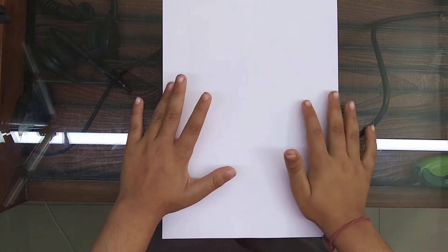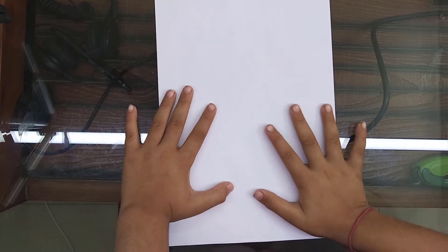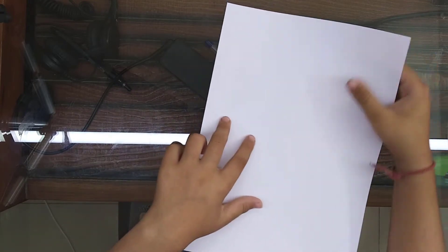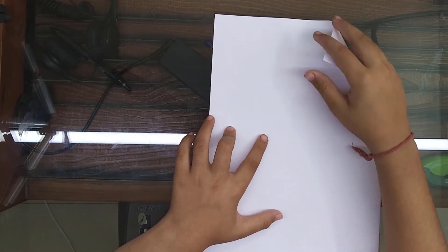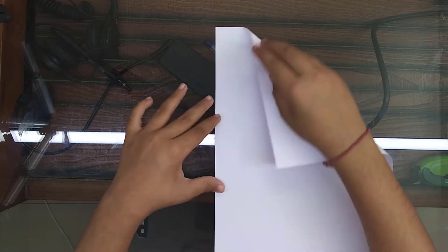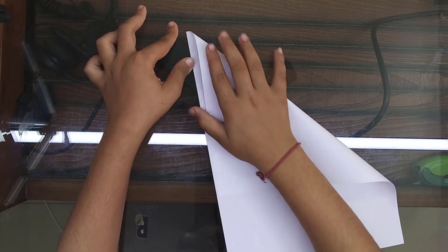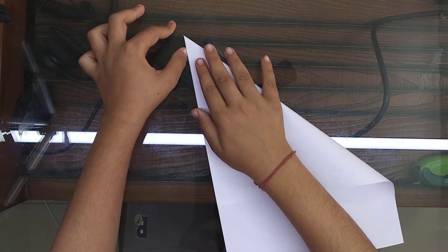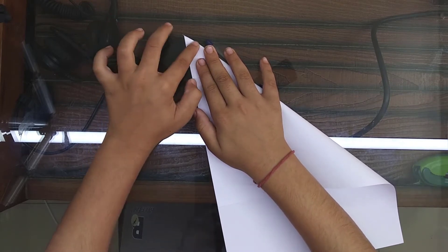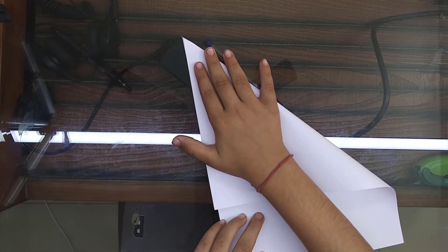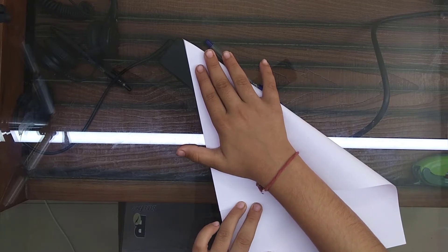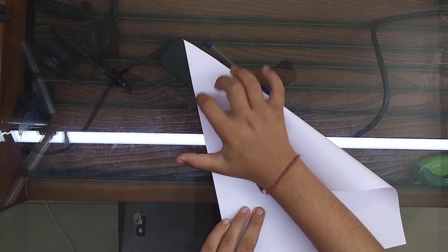Hi guys, today we are going to make a chip chop. Now look how to make it. First, this is your paper. Now take one of the corners, put it fully like this, and then match the corner.